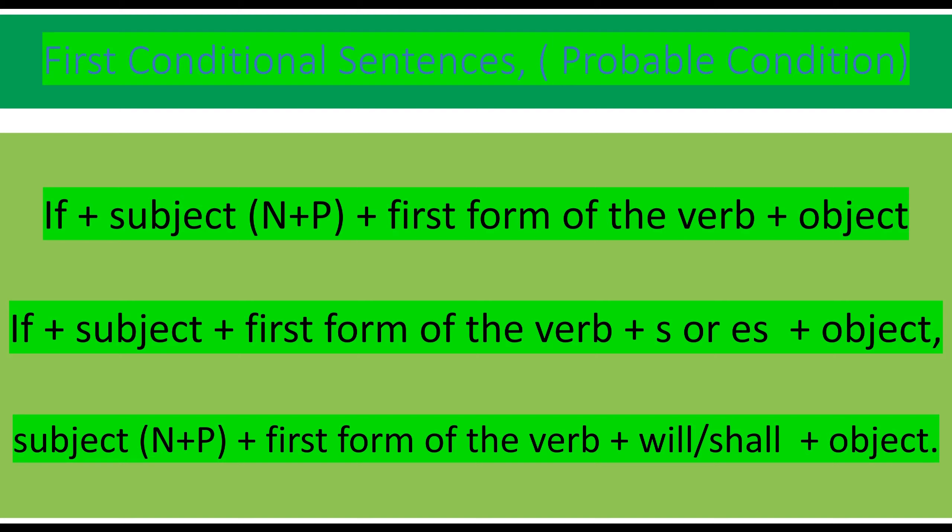The first form of the verb will be written. If + subject + first form of the verb + s or es + object will be written, because if a third person or any singular name has been used in the sentence, we use s or es with the first form. And subject + noun or pronoun + first form of the verb + will or shall + object will be used in the second part of the sentence, which is the consequence, result, or outcome part.